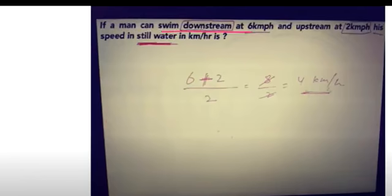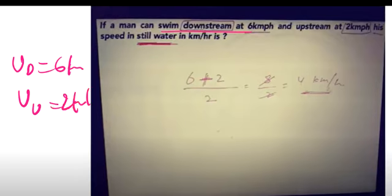A man can swim downstream at 6 km/h and upstream at 2 km/h. Speed in still water - what is his speed in still water? What is his speed of his own?